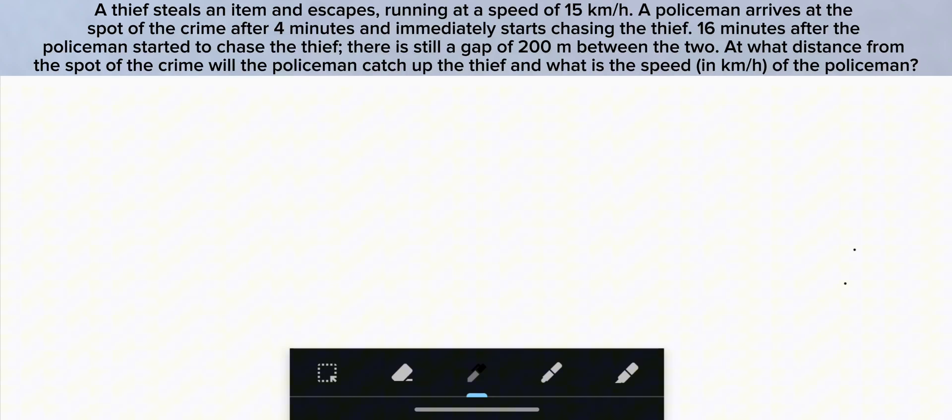Hi guys. Question is, a thief steals an item and escapes running at a speed of 15 km per hour. A policeman arrives at the spot of the crime after 4 minutes and immediately starts chasing the thief. 16 minutes after the police started to chase the thief, there is still a gap of 200 meters between them. At what distance from the spot of the crime will the police catch up the thief and what is the speed of the policeman?